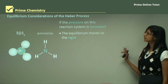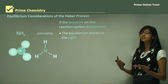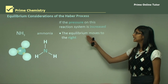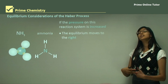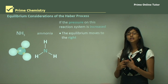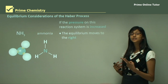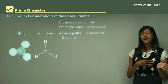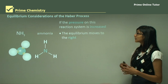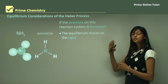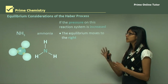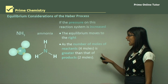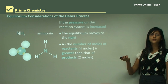If the pressure on the reaction system is increased, the equilibrium moves to the right. This is because one molecule of nitrogen reacts with three molecules of hydrogen to form two molecules of ammonia. On the product side there are only two molecules of gas, while on the reactant side there are four. If we increase pressure, the equilibrium moves to the side with the least number of molecules — the right — to reduce pressure. Since the reactants have four moles versus two for the products, the equation shifts to the right.